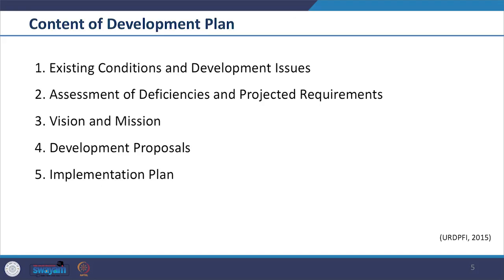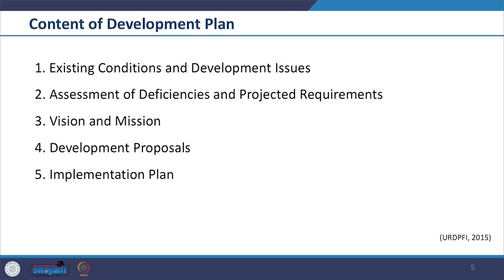While going through the example, we also looked at the range of maps prepared for the Development Plan document. In the content of the Development Plan, we had covered how to capture the existing conditions and development issues as per the URDPFI guidelines, and walked through the Draft Development Plan of Bhopal. In the Draft Bhopal Development Plan, we saw that a range of aspects were reviewed, maps were created to portray existing conditions and development issues, and simultaneously the assessment of deficiencies and projected requirements were estimated.